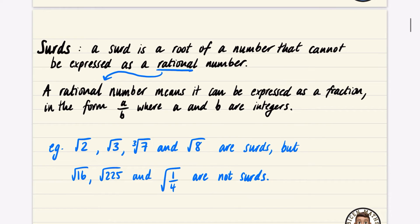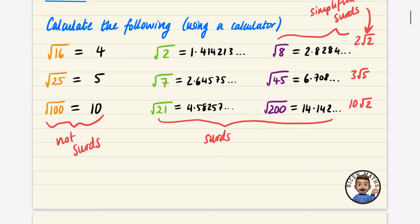So it says here that surds - a surd is a root of a number that cannot be expressed as a rational number. A rational number means it can be expressed as a fraction in the form a over b, where a and b are integers. So for example, the square root of 16 is 4, which is a rational number because 4 could be written as a fraction 4 divided by 1. So that's why this column are not surds.